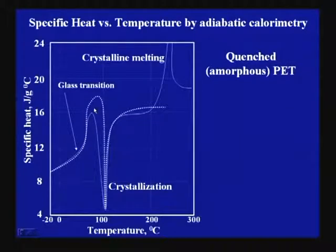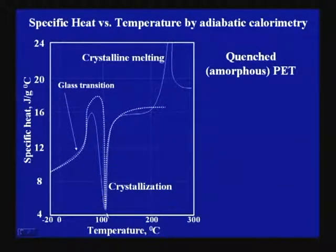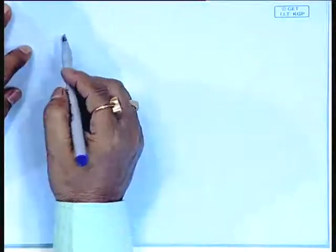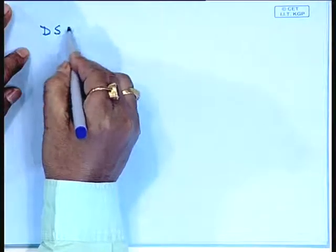Then gradually it undergoes segmental movement, which helps the crystallization or molecular ordering within the system. It shows crystallization temperature also, and beyond the crystallization temperature, if the temperature is further increased, it melts showing the melting transition. Beyond melting, you can have certain inflection due to degradation. Those things can be very clear if one analyzes a polymer sample through DSC — differential scanning calorimetry.